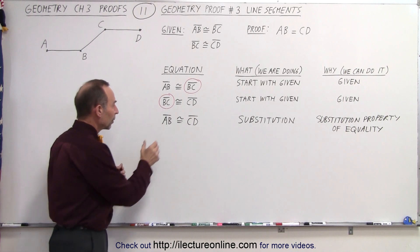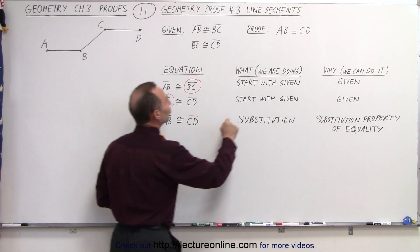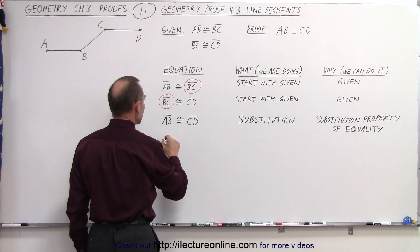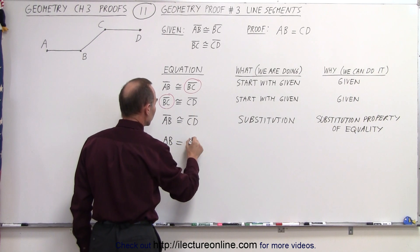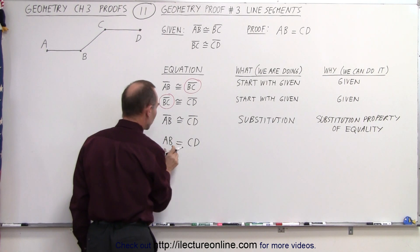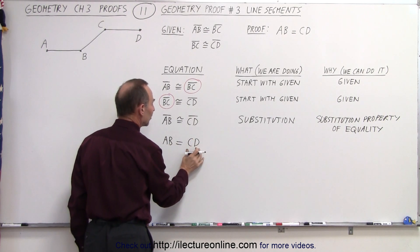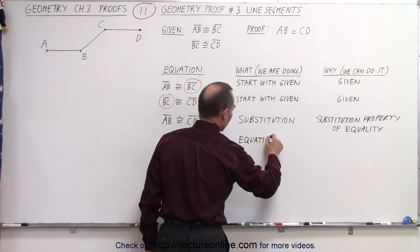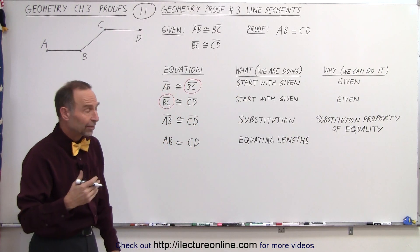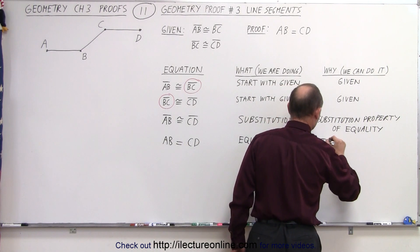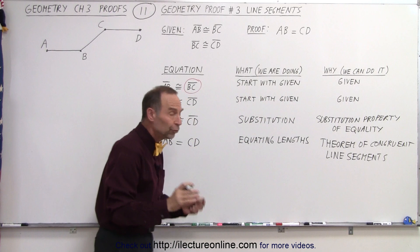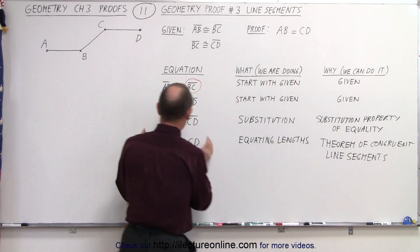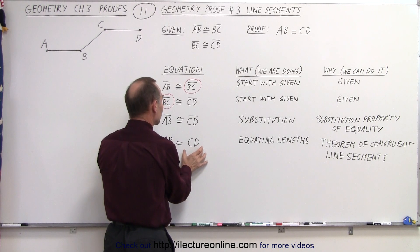Now, instead of comparing line segments being congruent to one another, we want to show that the length of each line segment is equal to the other. In other words, AB is equal to CD. Instead of writing it as a line segment, we say the length of line segment AB is equal to the length of line segment CD. We're now equating lengths rather than congruency. The theorem of congruent line segments states that if two line segments are congruent to one another, then their measures are equal to one another. Congruent line segments means their lengths must be the same as well.